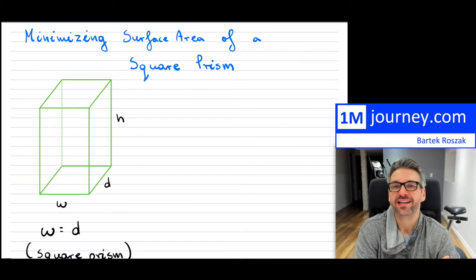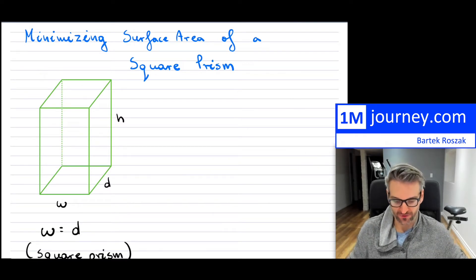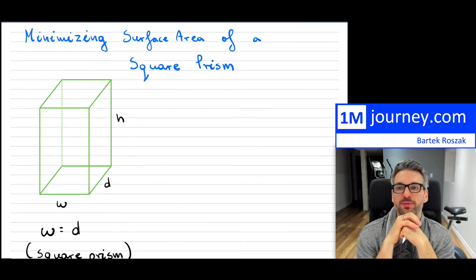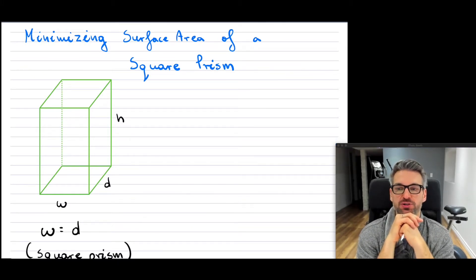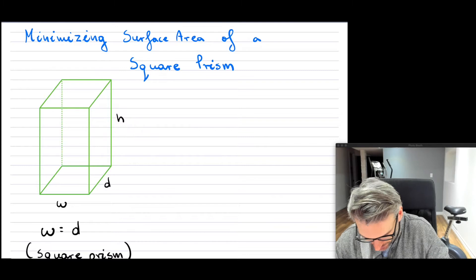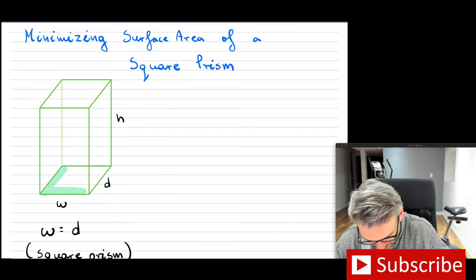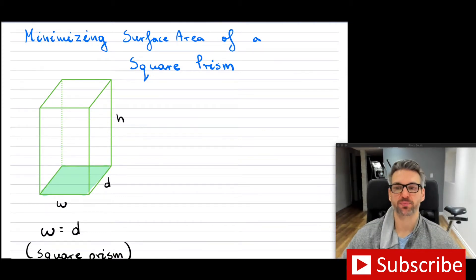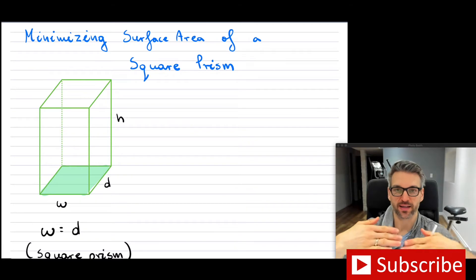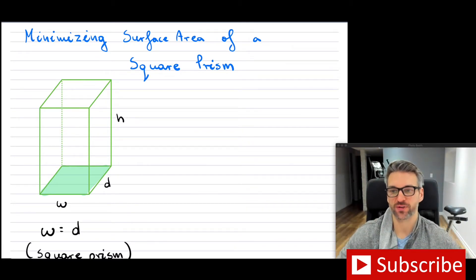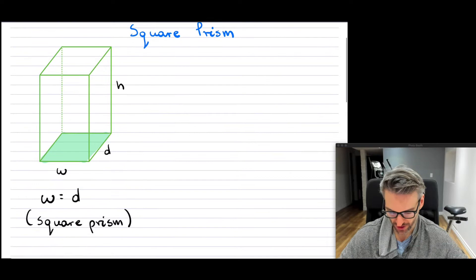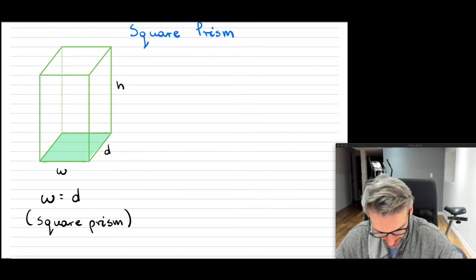We're back with another video on surface area and volumes. Here we have a problem where we're trying to minimize the surface area of a square-based prism. We have our base right here, and we're going to assume it's a square-based prism, so the width and the depth are identical — they're basically equal.